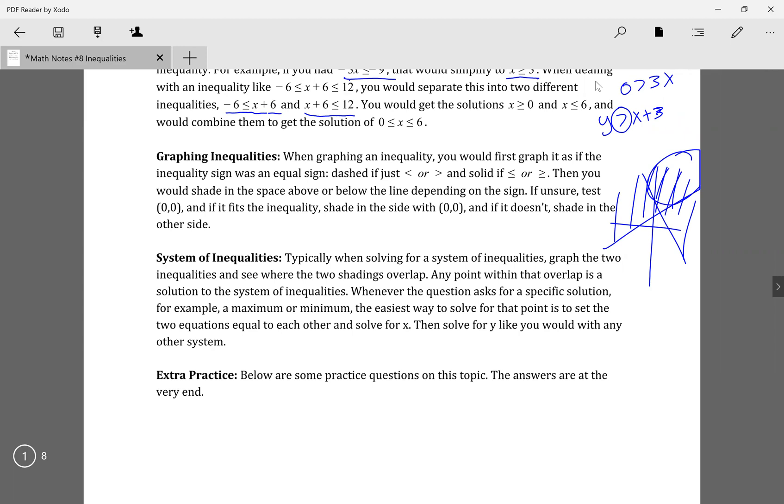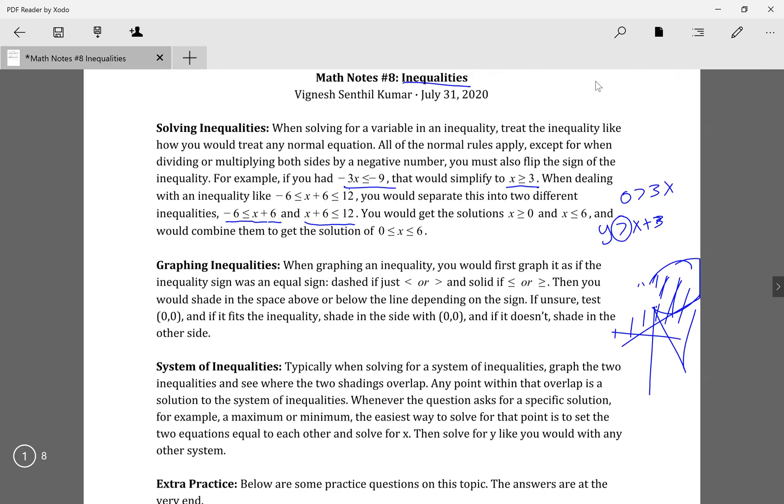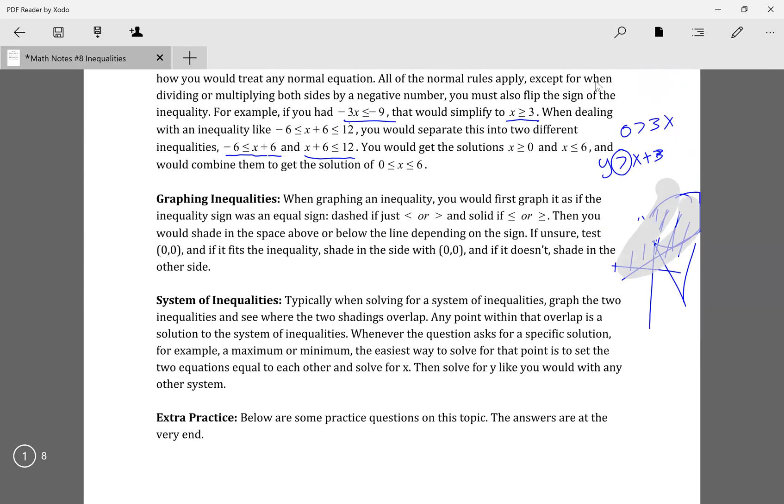There would be one intersect point between those two, where the two shaded regions overlap. That part, any point in that solution, that's the solution to the overall system of inequalities. Also sometimes they'll ask for a specific point, like a minimum or maximum value. Usually when they talk about that, they mean where the two lines or those lines intersect.